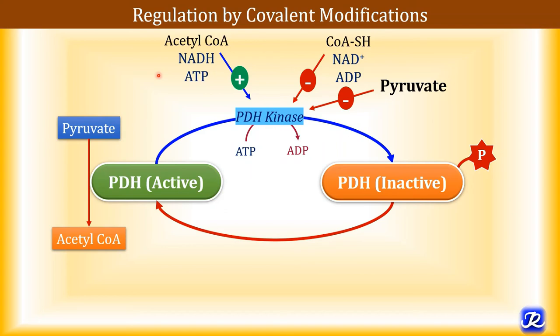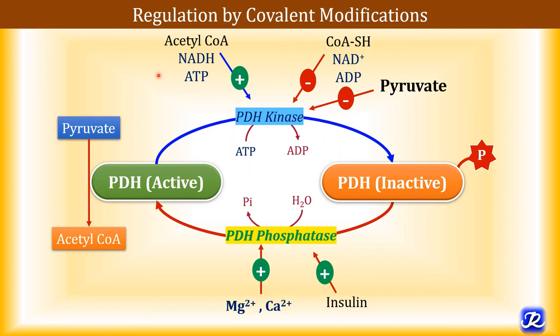Dephosphorylation — which reactivates PDH — is carried out by PDH phosphatase. This phosphatase is stimulated by insulin, which is why in the well-fed condition PDH is in its active dephosphorylated form with increased acetyl-CoA formation. Magnesium and calcium also stimulate PDH phosphatase.